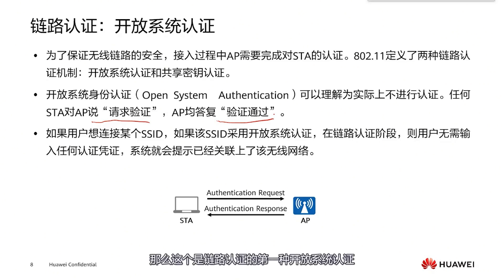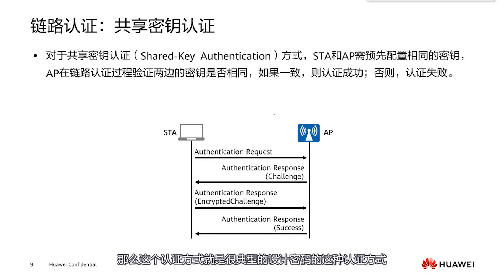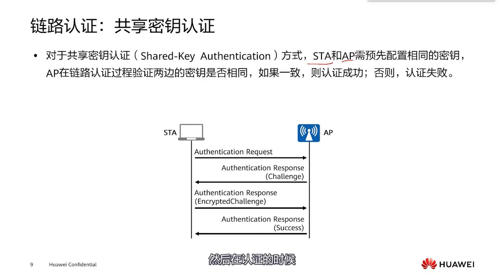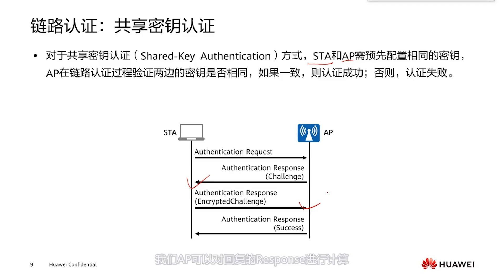Now let's look at the second type: shared key authentication. This authentication method involves a pre-configured password. Our user terminals and AP must be pre-configured with the same key. During authentication, our AP sends a challenge and our STA (station) responds with an encrypted answer. The AP then calculates the response, and if the keys match, authentication is successful. Thus, the link authentication between the STA and the AP is completed.